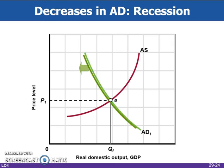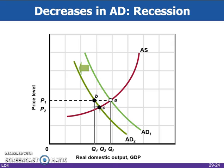This figure shows a decrease in aggregate demand that causes a recession. If the price level is downwardly inflexible at P1, a decline of aggregate demand from AD1 to AD2 will move the economy leftward from A to B along the horizontal broken line segment, and reduce real GDP from QF to Q1. Idle production capacity, cyclical unemployment, and a recessionary GDP gap of Q1 minus QF will result.